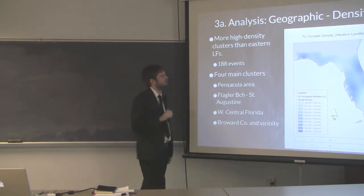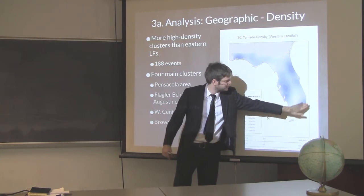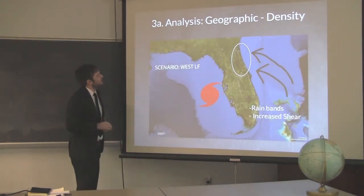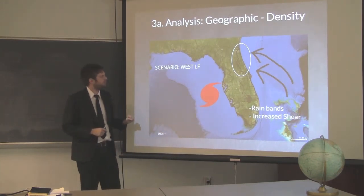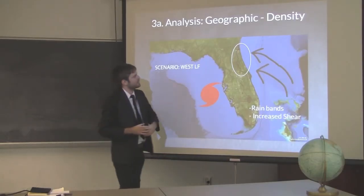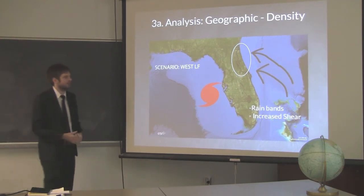For western landfalls, some results were expected — Pensacola hotspot, west of Jacksonville, west-central Florida — but unexpectedly, high-density clusters also appeared south of St. Augustine around Flagler Beach, north of Daytona Beach, and even some in Broward County. The explanation that occurred to me: for a western landfalling TC approaching the peninsula, you still have a southeasterly to easterly surface wind flow on the eastern side of the state. That region still has high horizontal vorticity, good thunderstorm development on the right front quadrant, and the best shear — creating opportunity for tornado development.